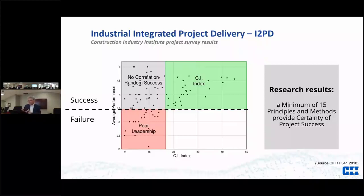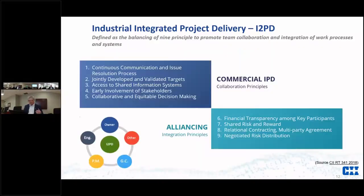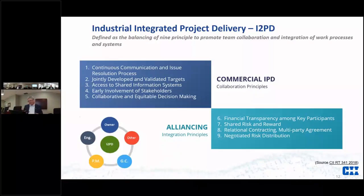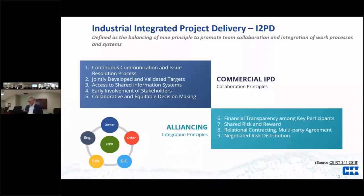At this point we still didn't have I2PD, but we realized we had to take the collaboration principles — five principles from the CI index — and then the four integration principles from alliancing, and put them together to create what we call the CI index. For much more detail on the research, take a look at the research paper published by CII — it does a great job explaining this in more detail than we typically have time for in these presentations.